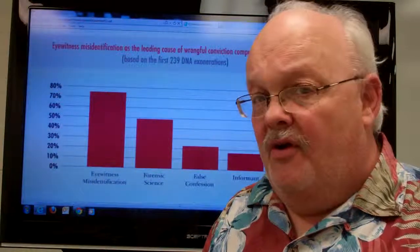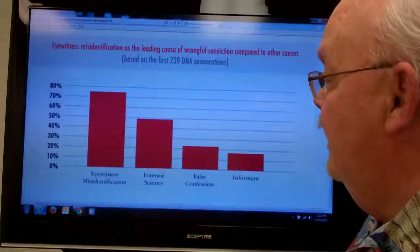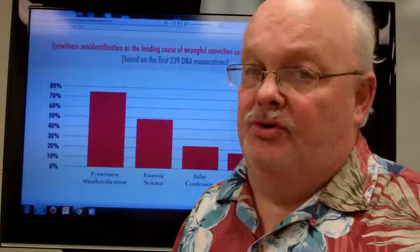jealousy, boyfriend-girlfriend issues, a number of things where informants falsely accuse somebody. In many cases, the informant is actually the wrongdoer.